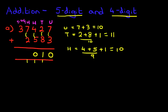Now we're going to add the thousands. We've got 7 plus 2 plus the 1 we've carried over. So 7 plus 2 is 10, plus the 1 is 11.